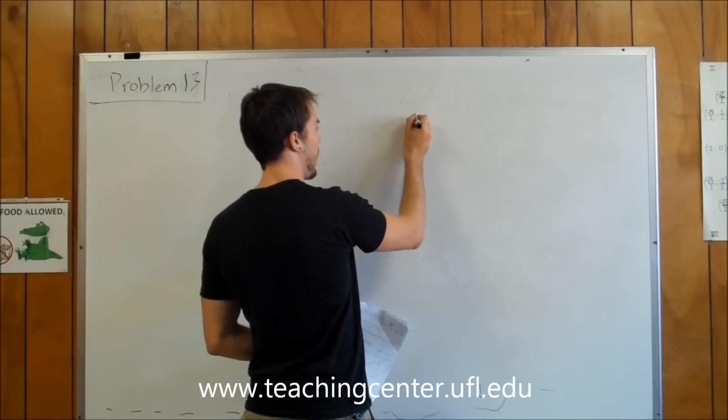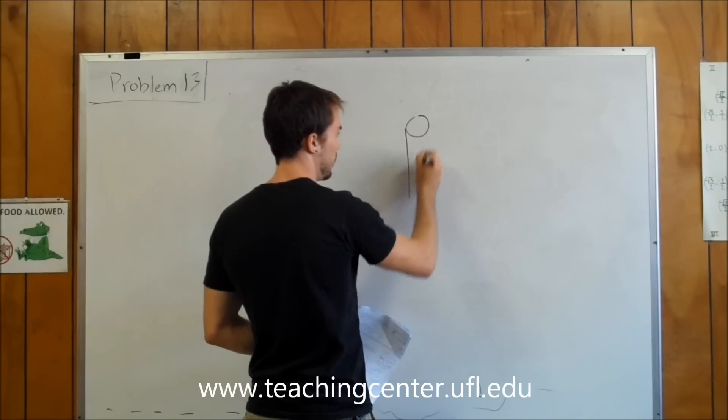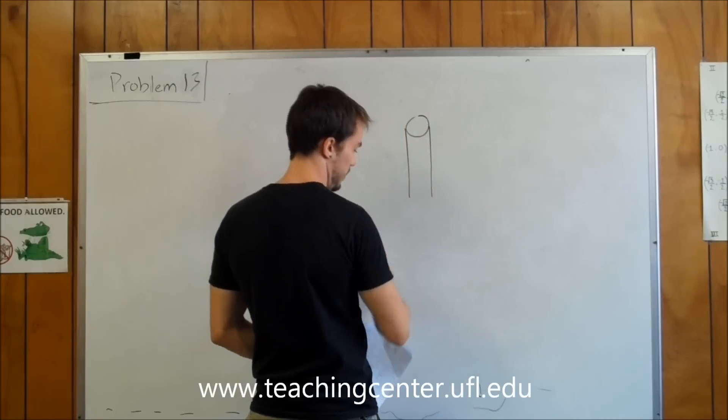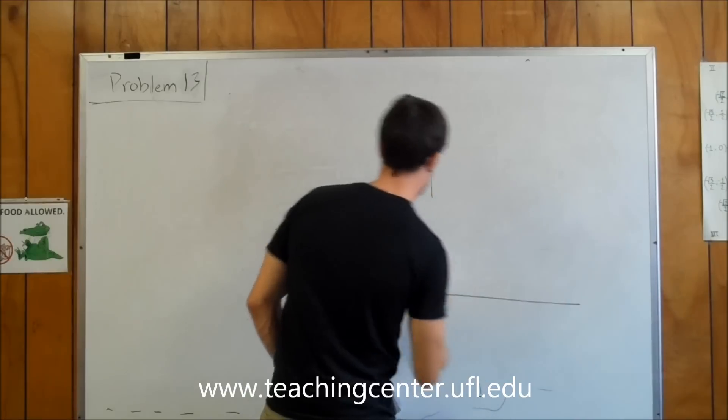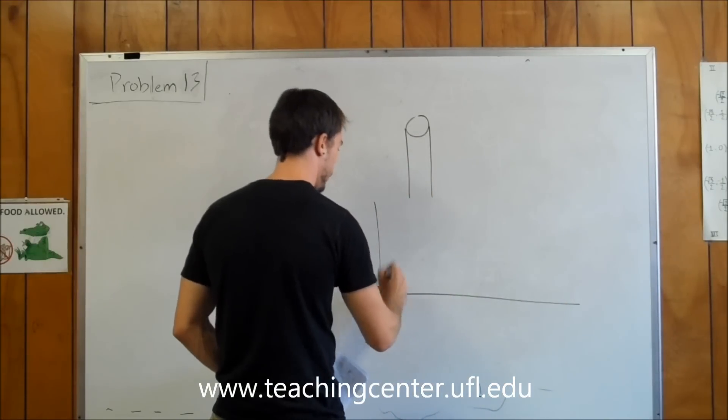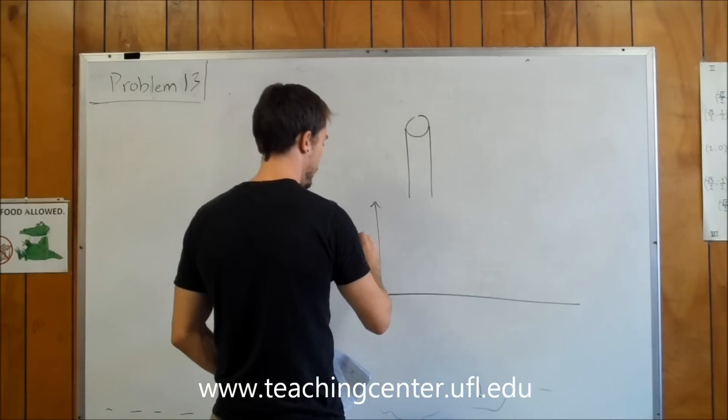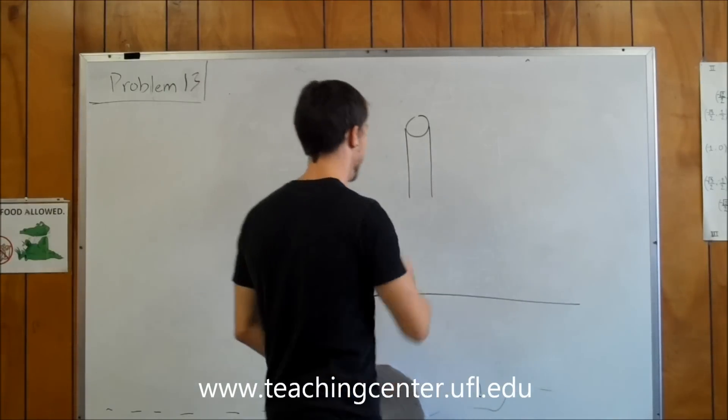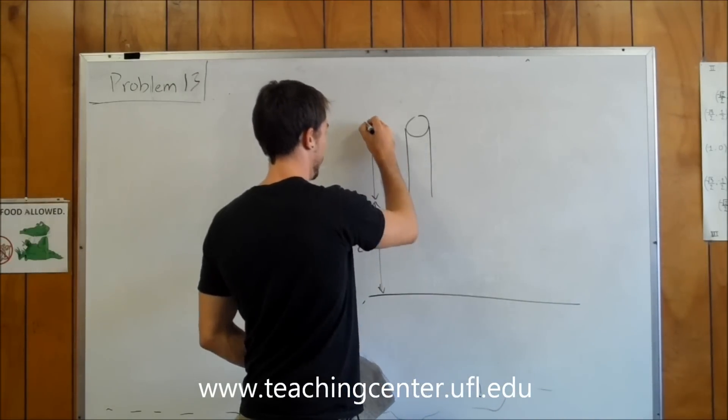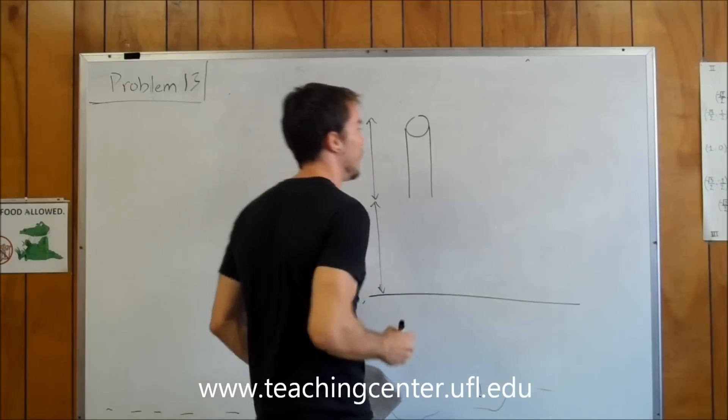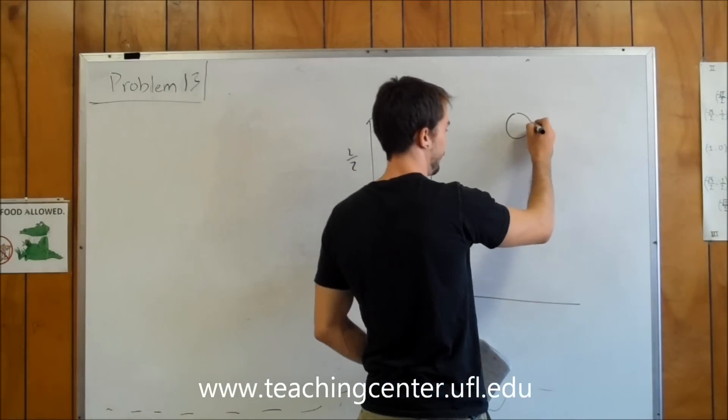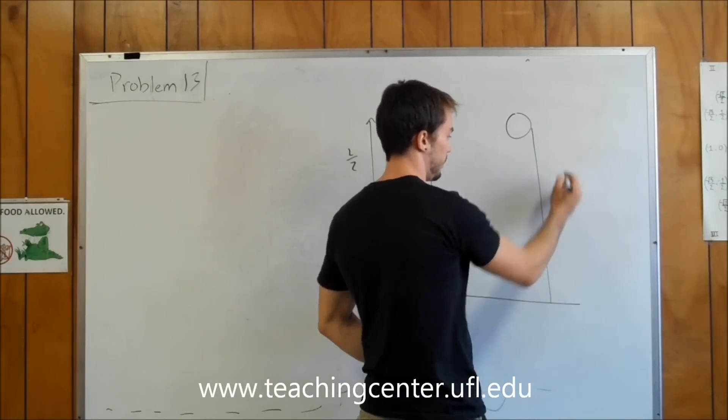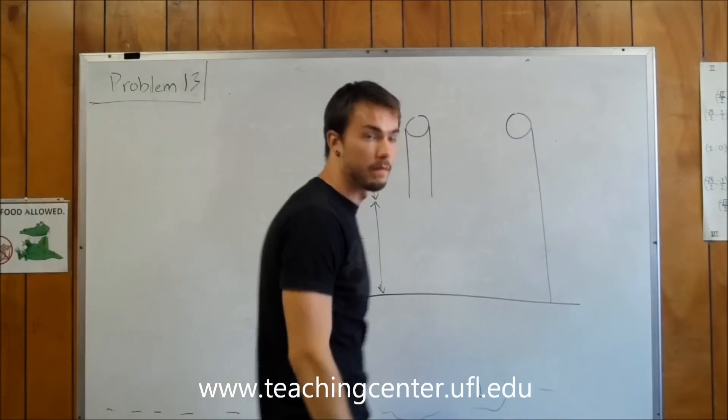Basically we have a peg, the rope to the ground. So it starts off right here at L over 2, where each of these lengths is going to be L over 2, and ends up like that where it touches the ground basically.